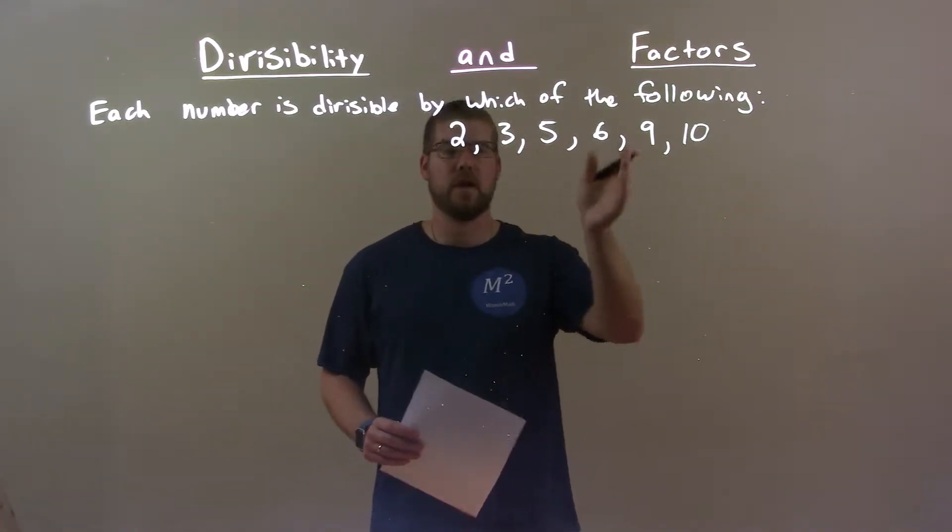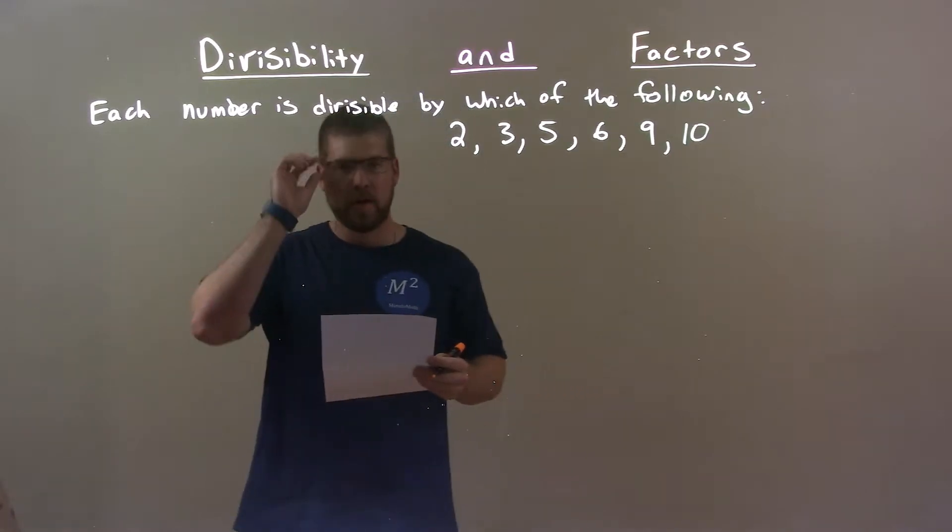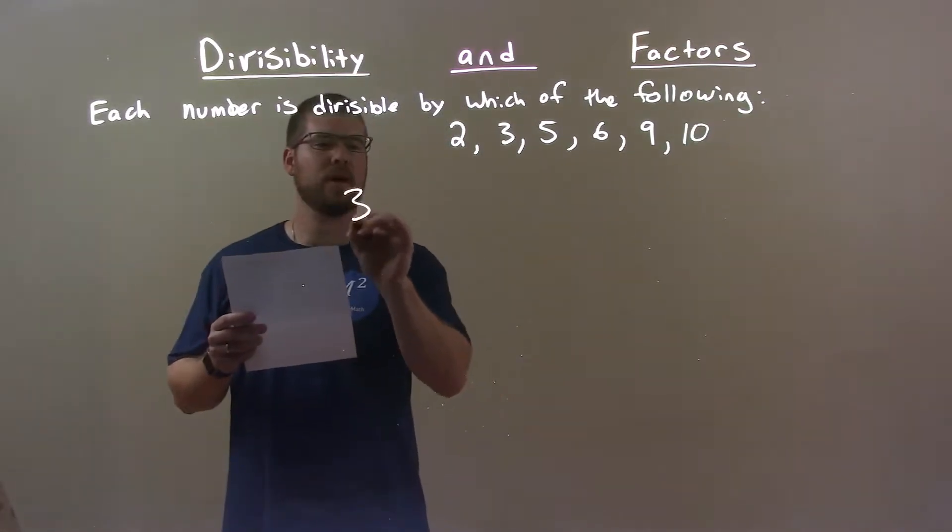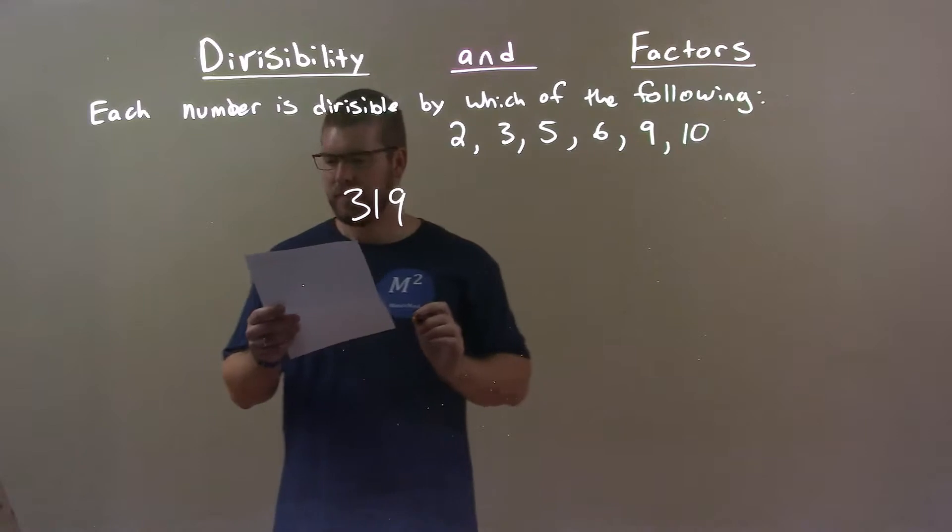2, 3, 5, 6, 9, 10. So, the number that's given is 319.